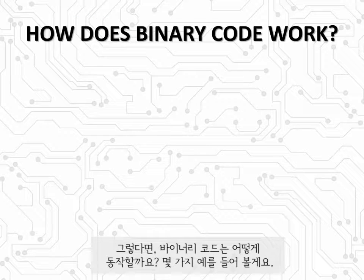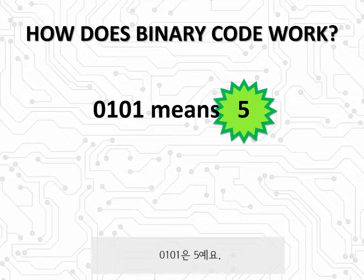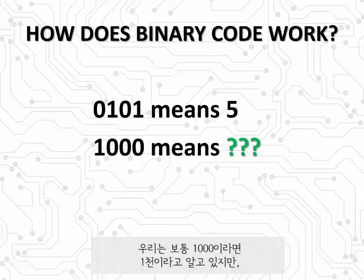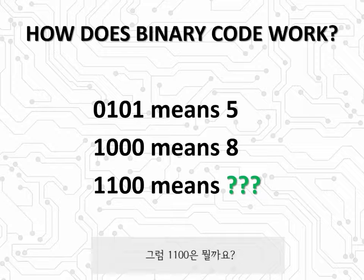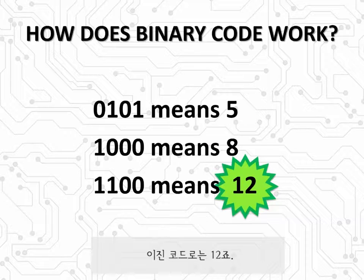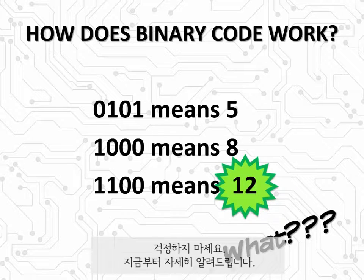So how exactly does binary code work? Let me give you a few examples. Any idea what 0101 means in binary? It means 5. To normal people, 1000 means one thousand, but in binary it means 8. And 1100? In binary, that's 12. If you don't know how to read binary code right now, you're going — what? But don't worry, because I'm going to teach you right now.